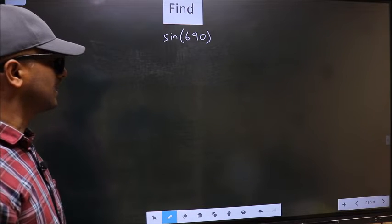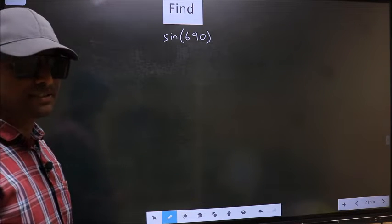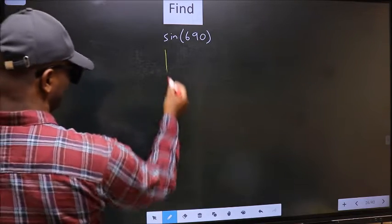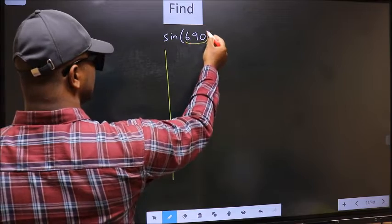Find sin 690. To find this, we should follow this method. Here we have 690.